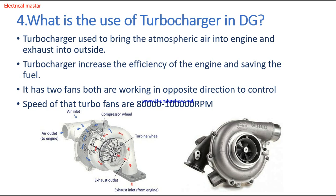Fourth question: what is the use of a turbocharger in a diesel generator? The turbocharger brings atmospheric air into the diesel engine and exhausts gases outside. It also increases the efficiency of the engine and saves fuel. The turbocharger normally has two fans — you can see this picture — coupled to each other, rotating in opposite directions. One fan inlets air into the engine and the other exhausts gases outside. The speed of these fans is very high, around 80,000 to 1,00,000 RPM.